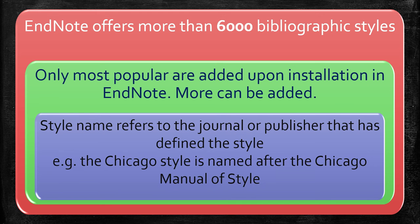More styles can be added. The style name refers to the journal or publisher that defined the style. For example, the Chicago style is named after the Chicago Manual of Style.